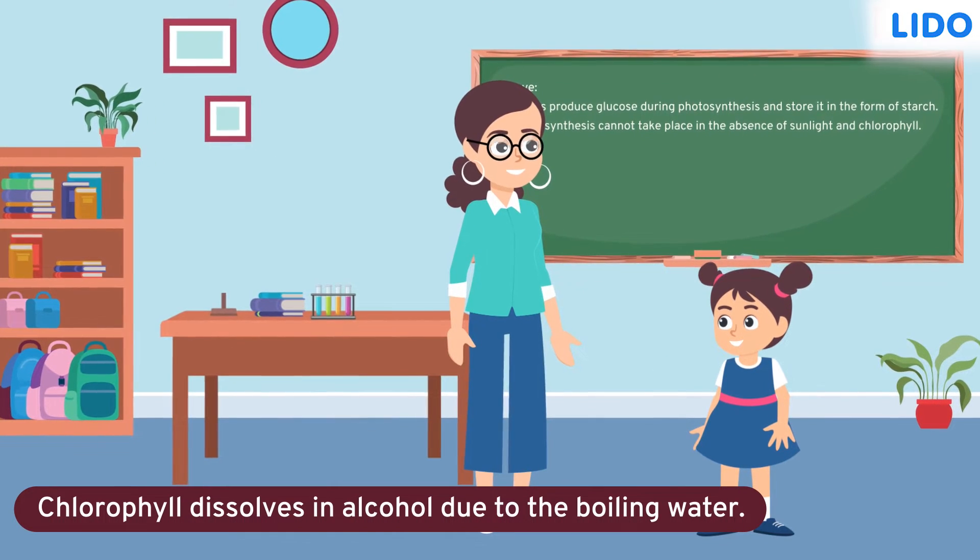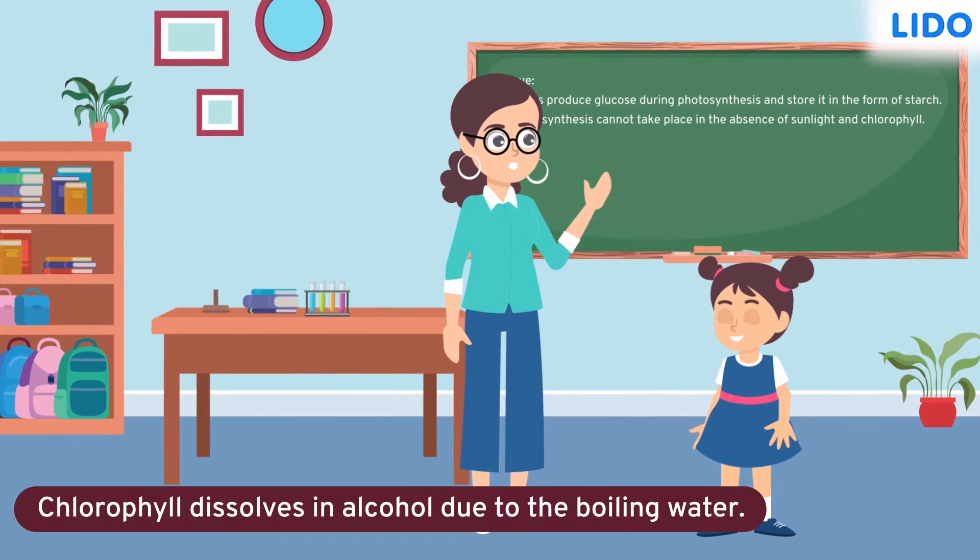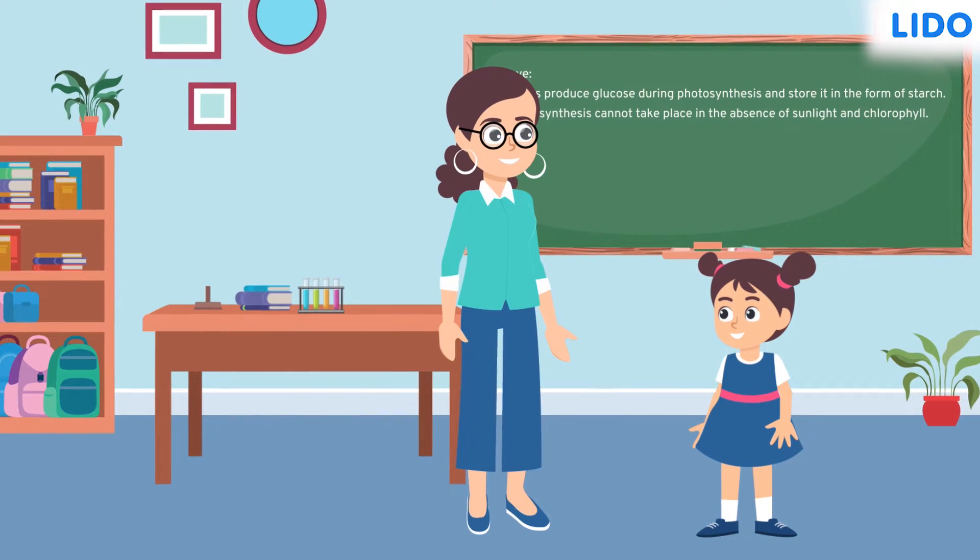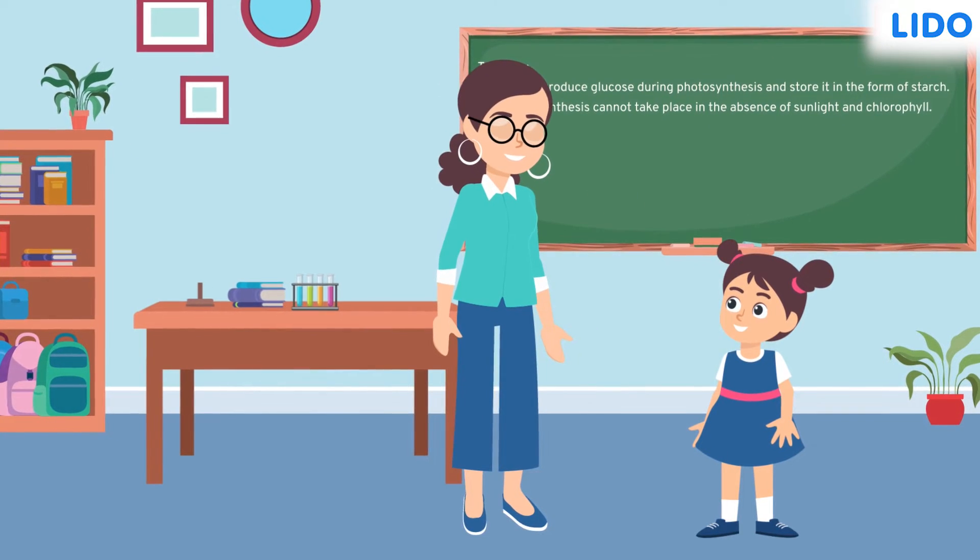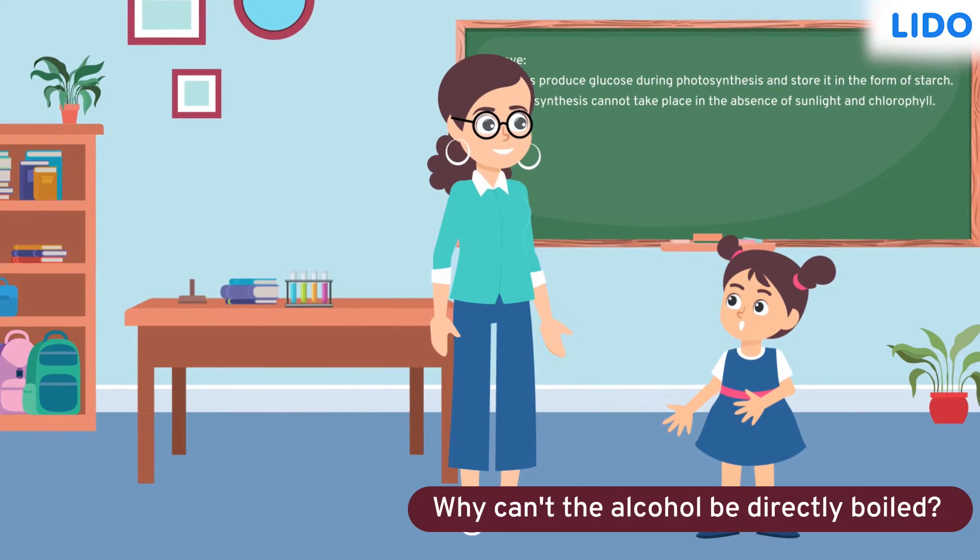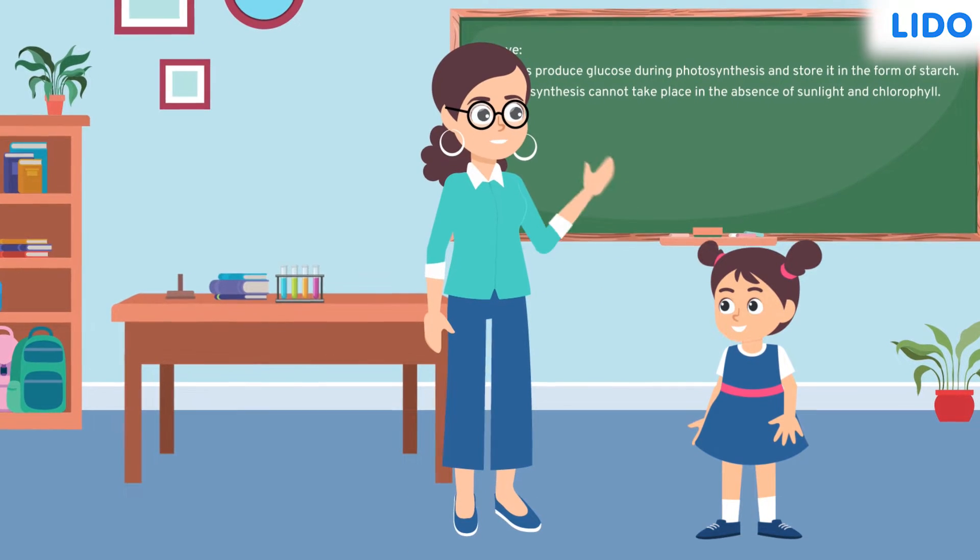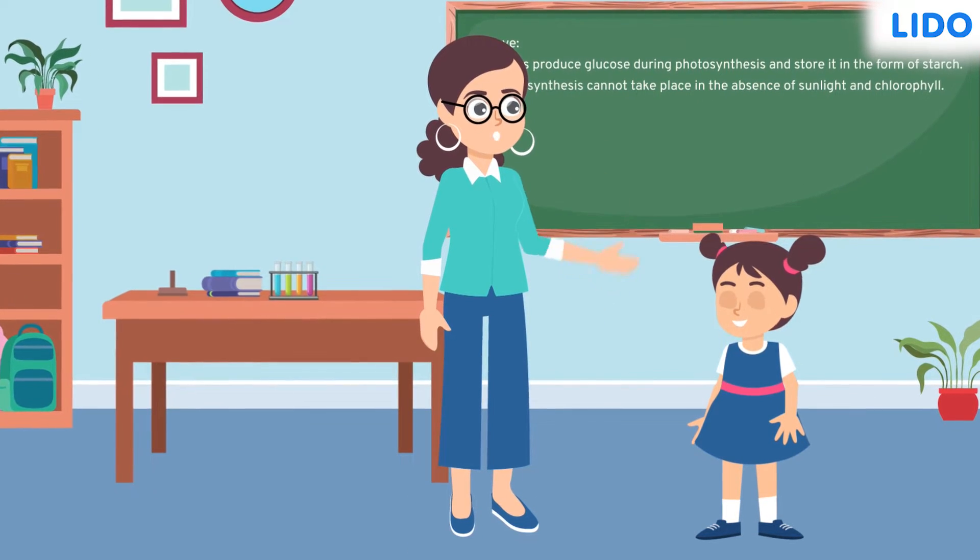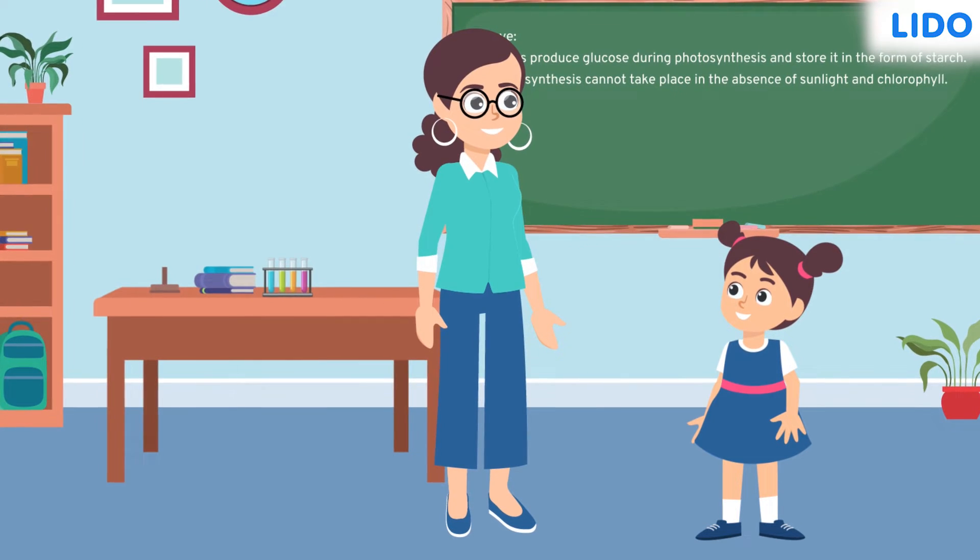Chlorophyll dissolves in alcohol due to the boiling water, replied the teacher. Sapna asked, why can't the alcohol be directly boiled? Directly boiling the alcohol would cause it to evaporate, replied the teacher.